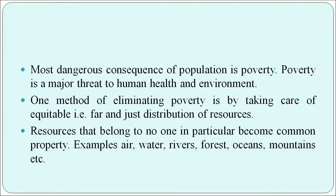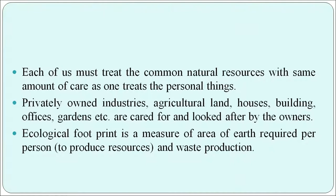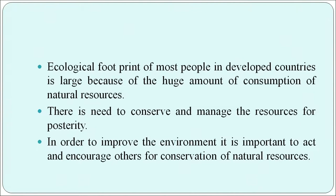The most dangerous consequence of population growth is poverty. Poverty is a major threat to human health and environment. One method of eliminating poverty is through equitable — that is, fair and just — distribution of resources. Resources that belong to no one in particular become common property, such as air, water, rivers, forests, oceans and mountains. Each of us must treat common natural resources with the same care as personal things. Privately owned industries, agricultural land, houses, buildings, offices and gardens are cared for by their owners. Ecological footprint is a measure of the area of earth required per person and waste production. The ecological footprint of most people in developed countries is large because of huge consumption of natural resources. There is a need to conserve and manage resources for posterity and to act to encourage others for conservation.